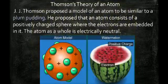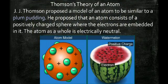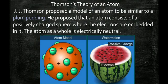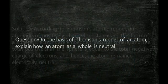The first atomic model was given by J.J. Thomson. He compared the atom to a plum pudding or a watermelon — the red edible part represents the positive charge, and the black seeds represent the electrons embedded within it. This is called the plum pudding model. Thomson stated that the whole atom is electrically neutral because total positive and total negative charges are equal, but he could not provide any experimental evidence for this model.